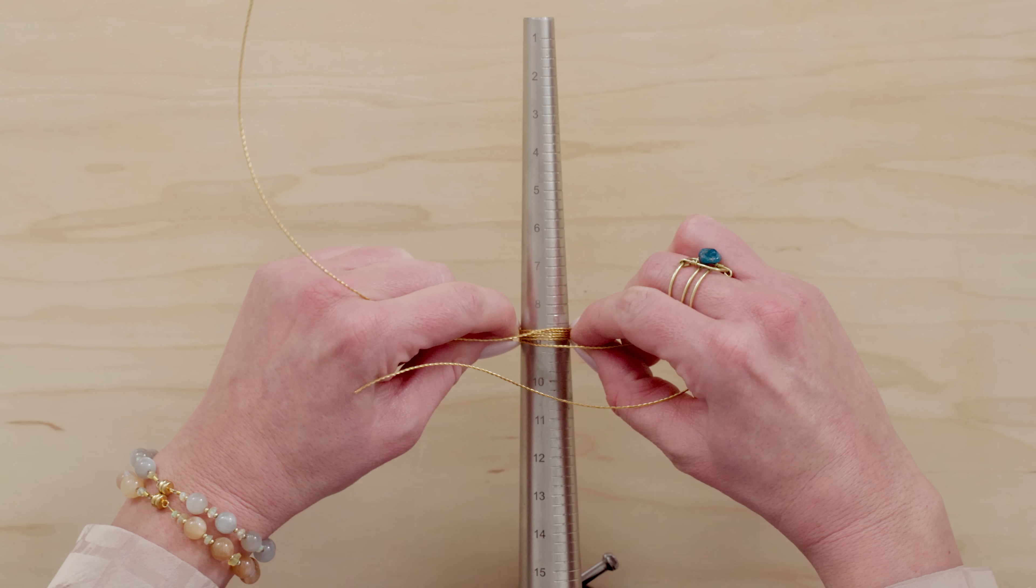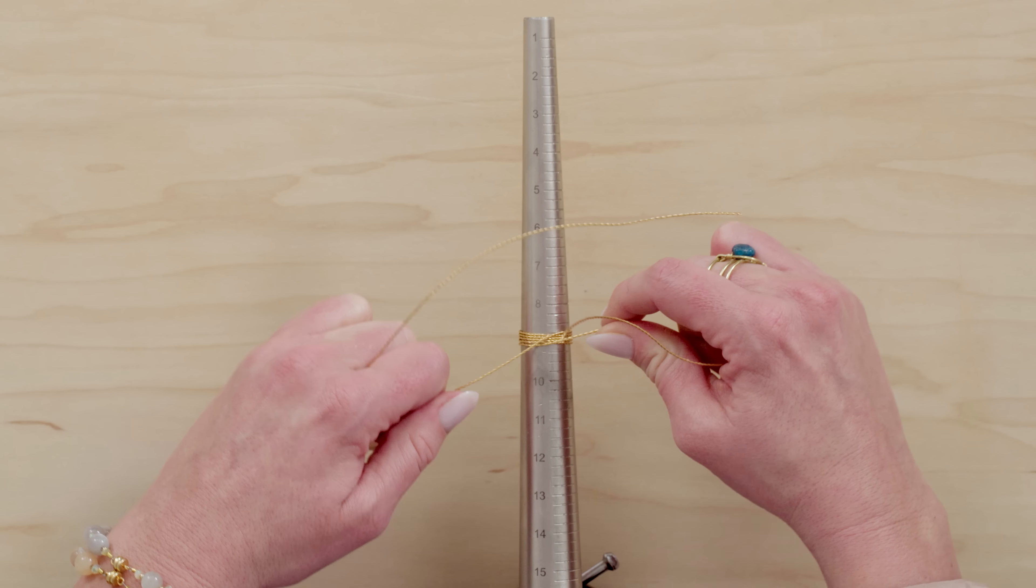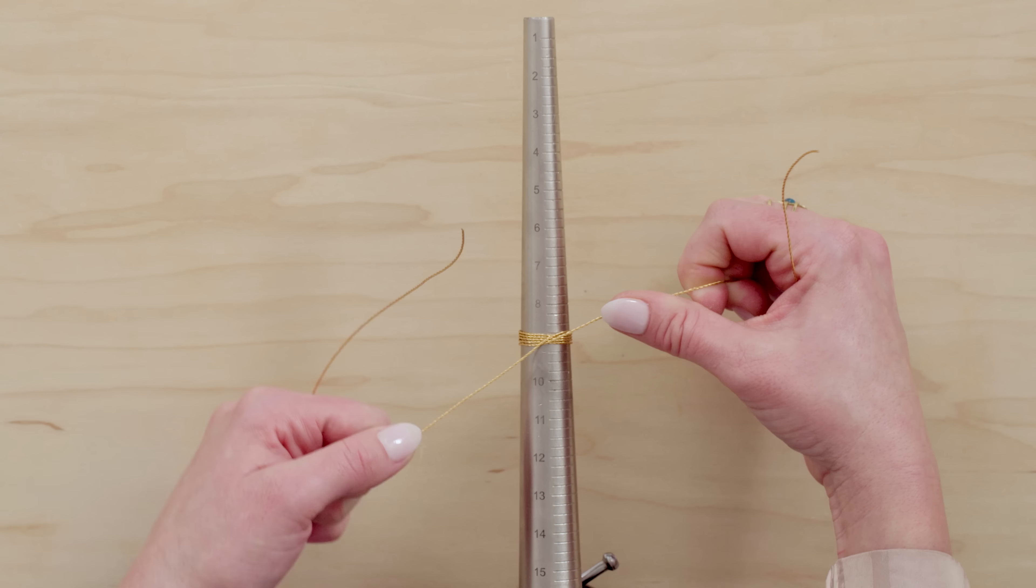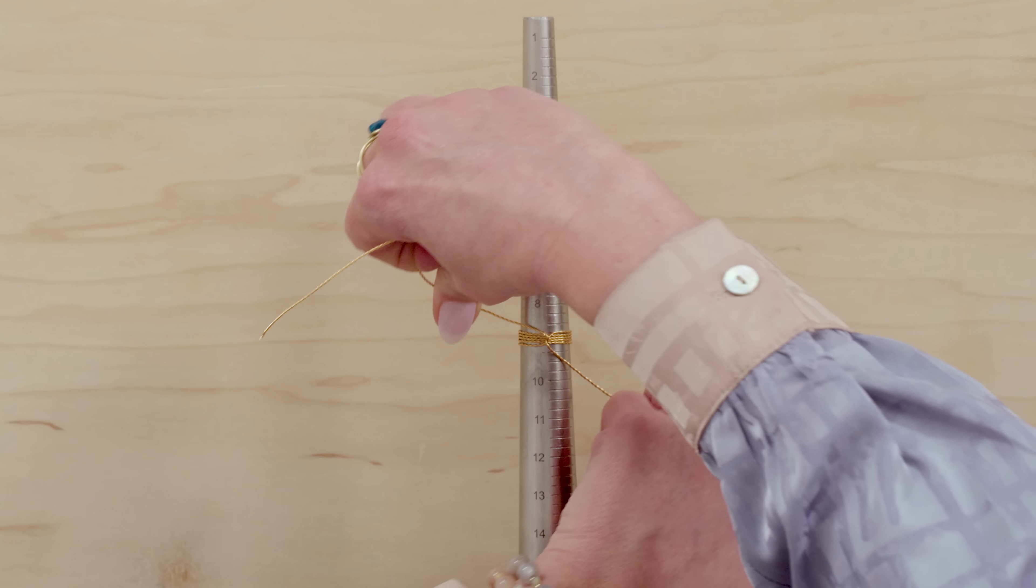So if you want your band to be super thick you can keep going or if you want it to be thinner you can do less. And make sure not to cross your wires here if possible.